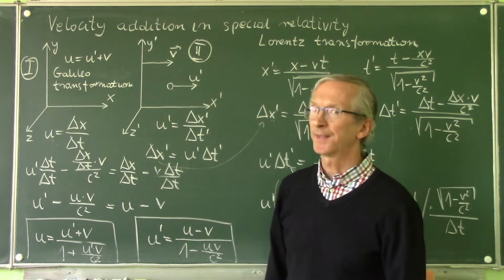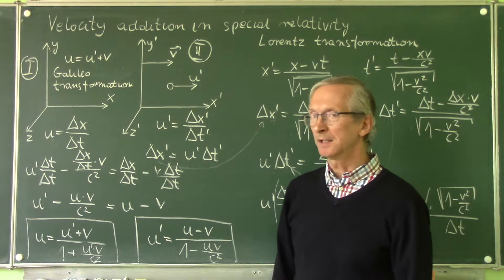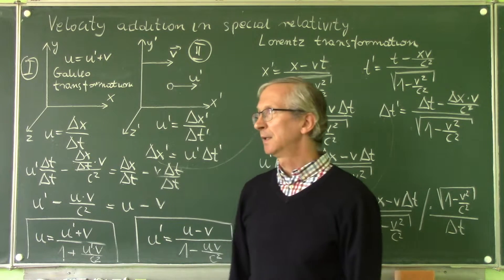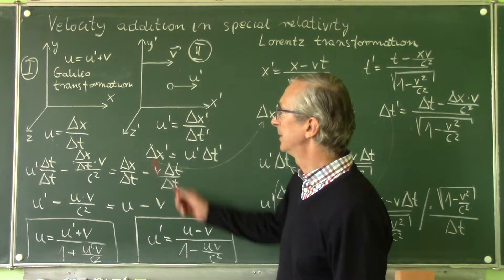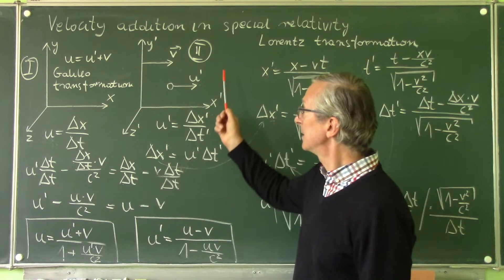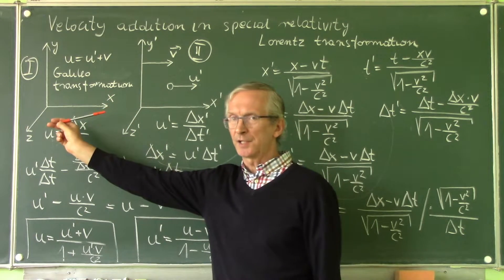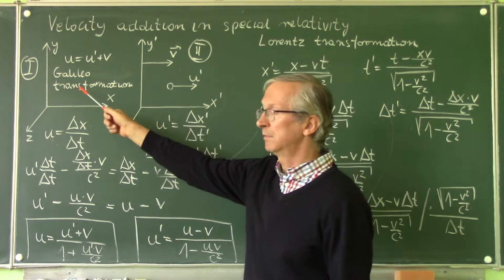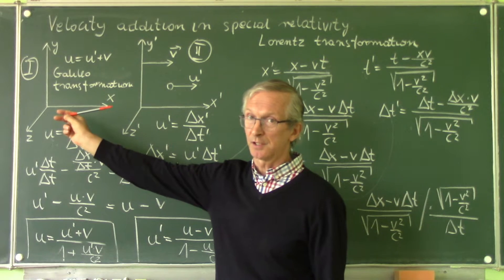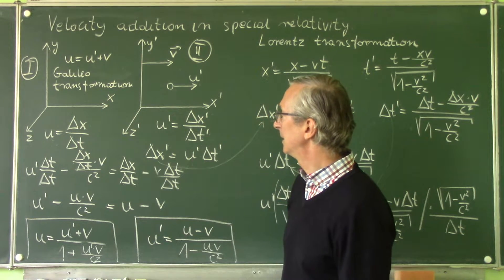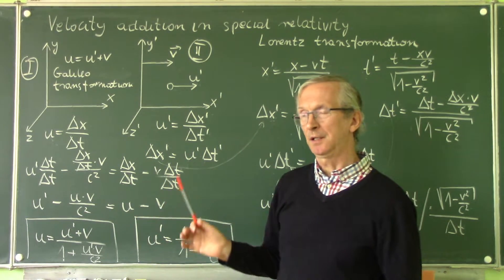Next question about special relativity. Today we want to solve the problem of adding velocity in special relativity. Let's assume that we have two inertial frames of reference, the first and second, and the second frame of reference is moving with constant speed in the direction of the axis x related to the first frame of reference. We have here an object moving also in the direction of the axis x, and the velocity of this object will be measured by these two observers.